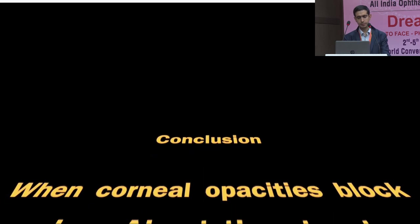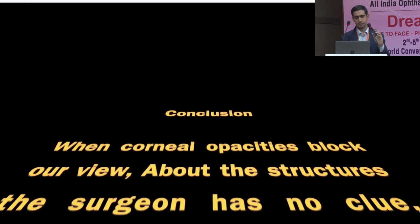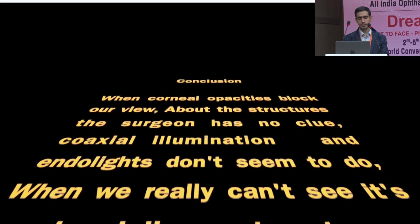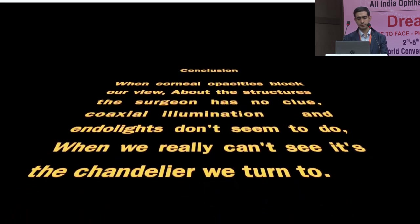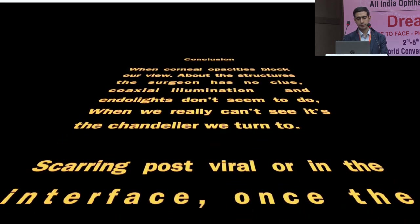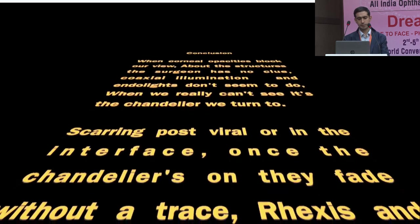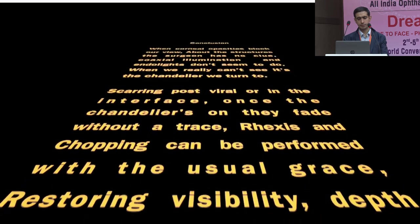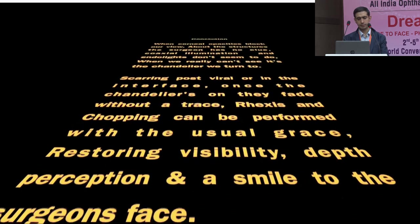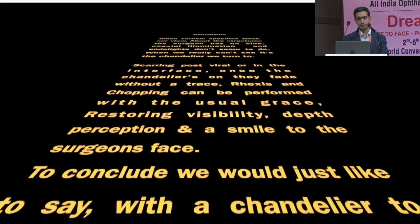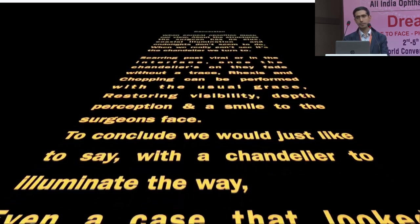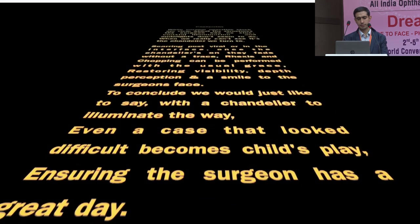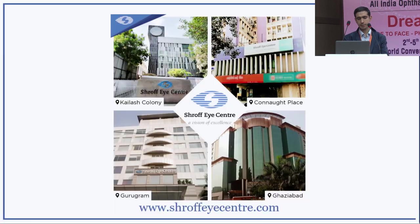When corneal opacities block our view, coaxial illumination and endolights don't seem to do. When we really can't see, it's the chandelier we turn to. Scarring post-viral or scarring in the interface — once the chandelier is on, they fade without a trace. Rexis and chopping can be performed with the usual grace, restoring visibility, depth perception, and a smile to the surgeon's face. With a chandelier to illuminate the way, even a difficult case becomes child's play.